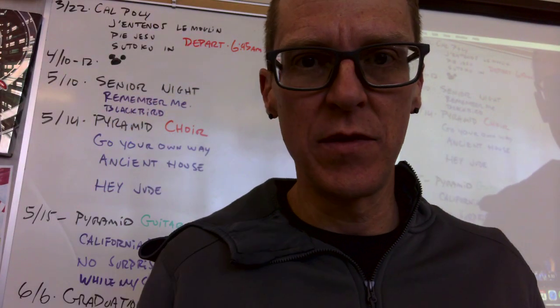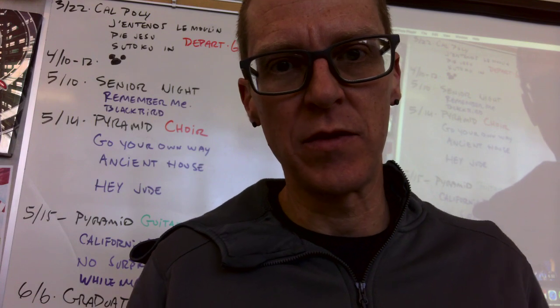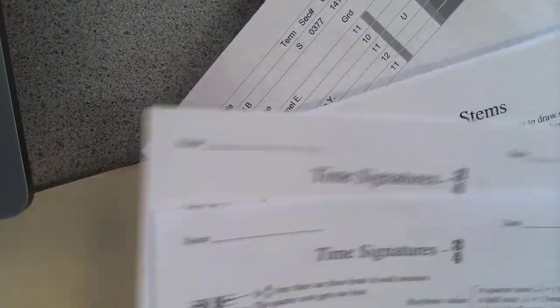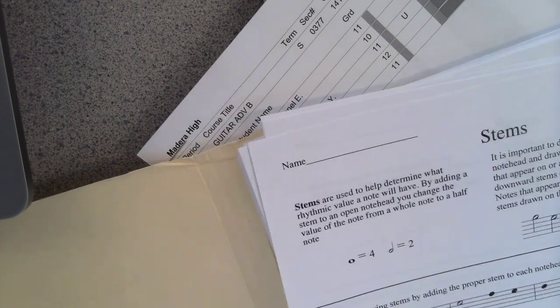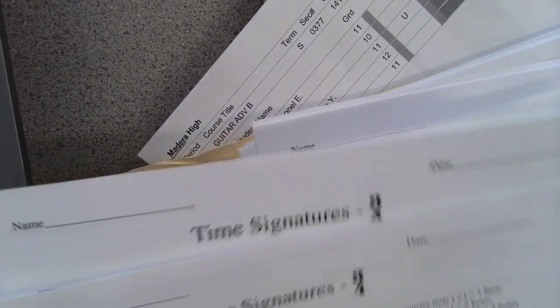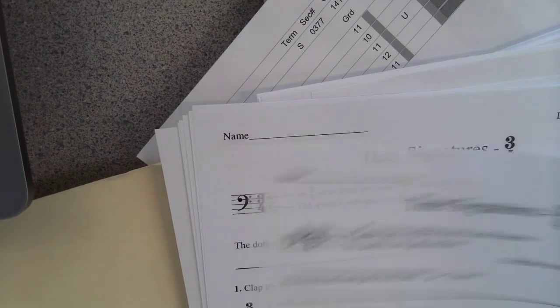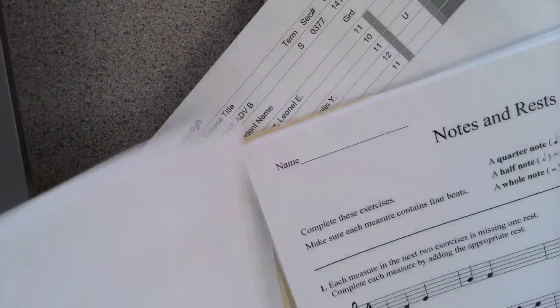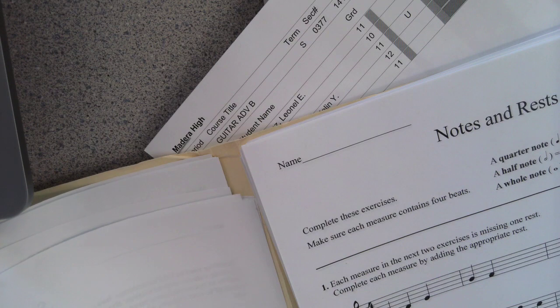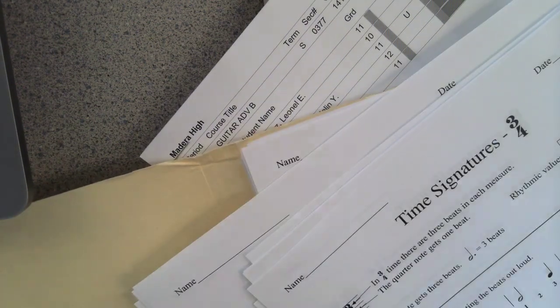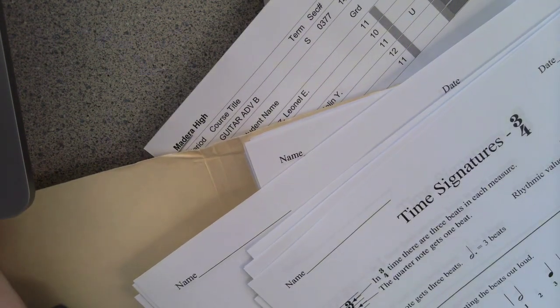All right. Hey, Sonia. So these are the worksheets that you're missing, and here's how to do them. Time signatures, we just did that one. Stems. So you got stems. Time signatures is the one that we did on Tuesday when you were gone. And I think notes and rests. That should be it. Let me just double check, make sure those are the ones that you need.